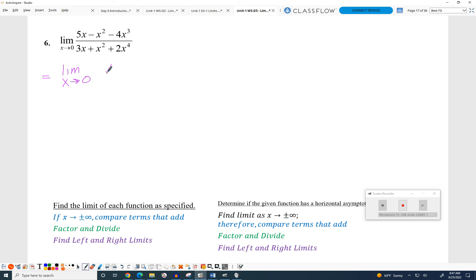So that means I get an X. Now I'm going to be left with five subtract X subtract 4X squared. And I can do the same thing on the bottom. Pull out an X. Three plus X plus 2X cubed.